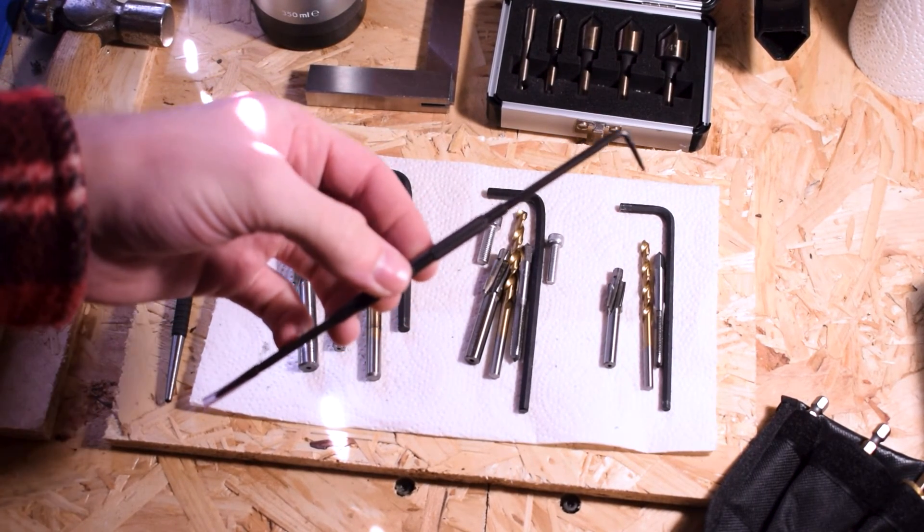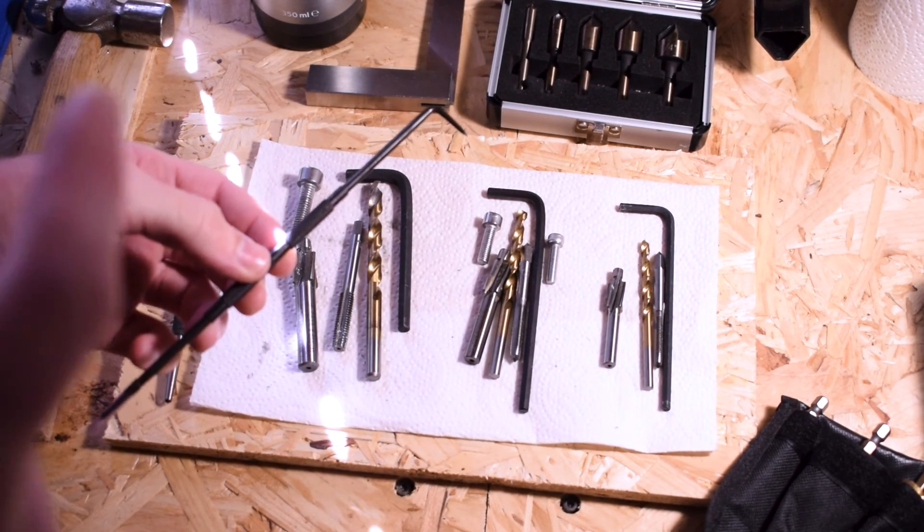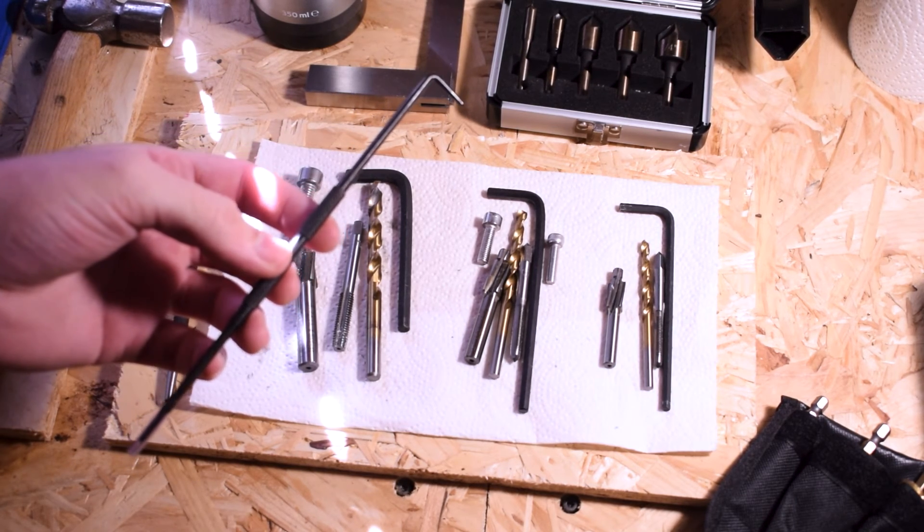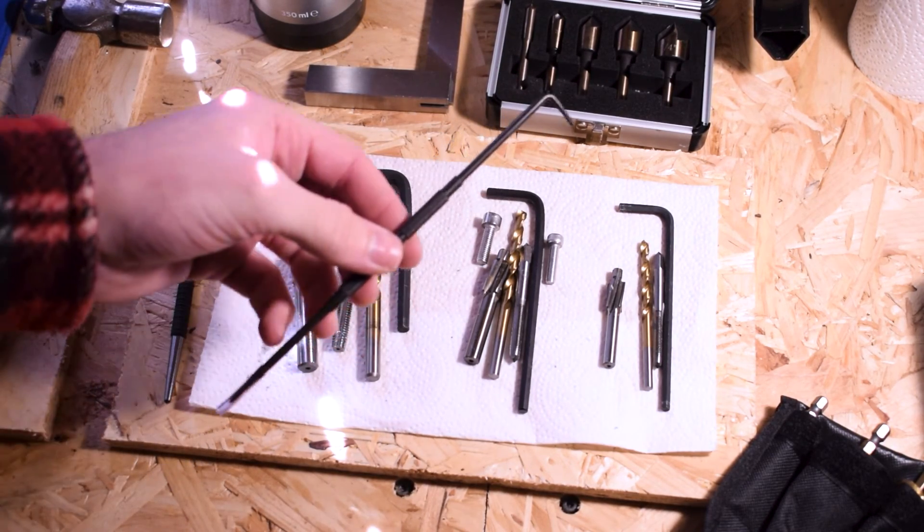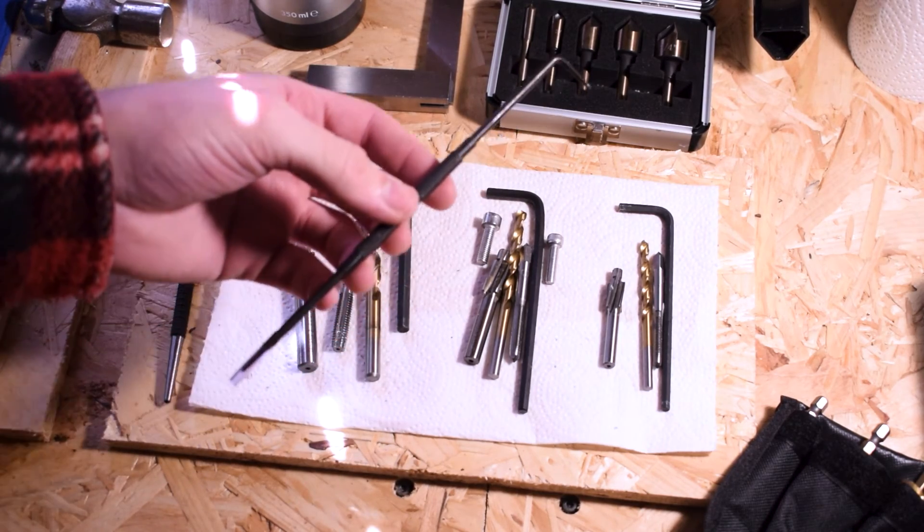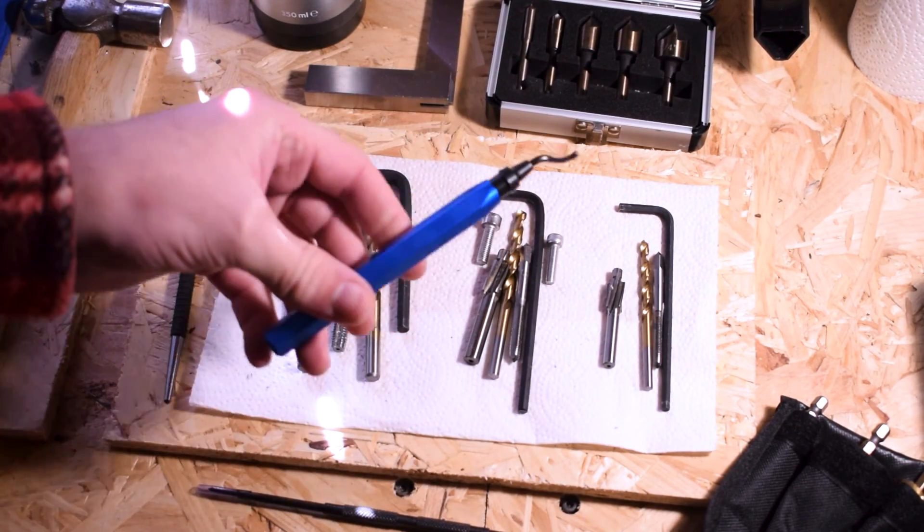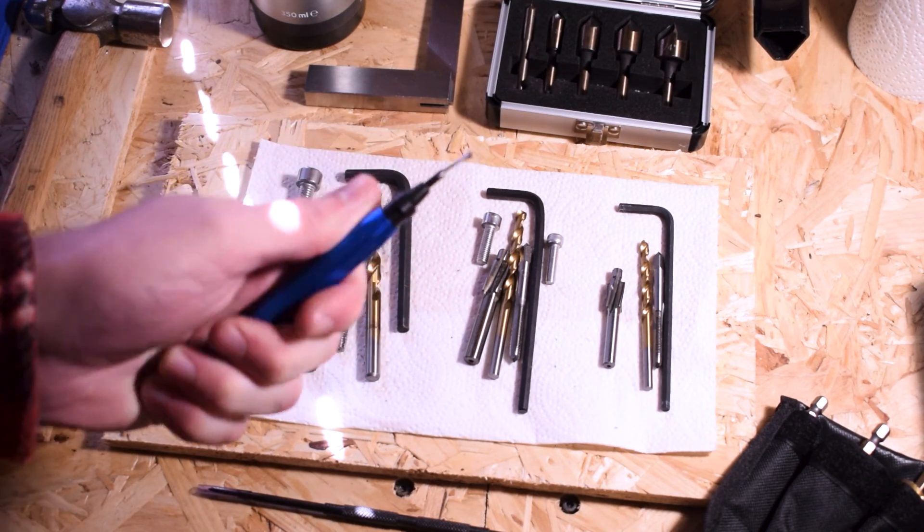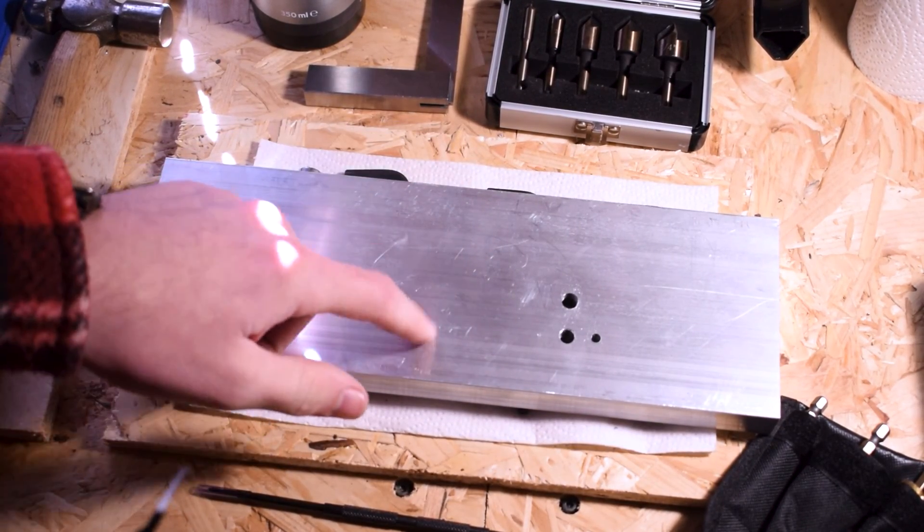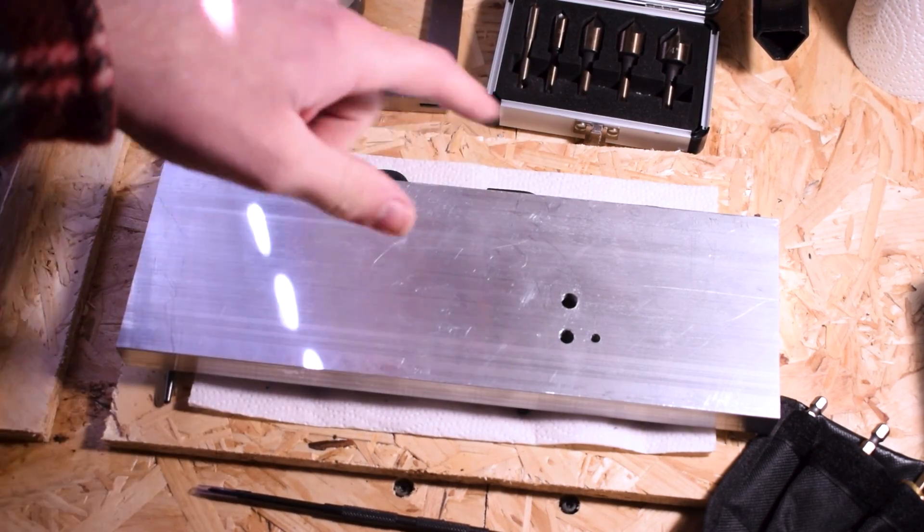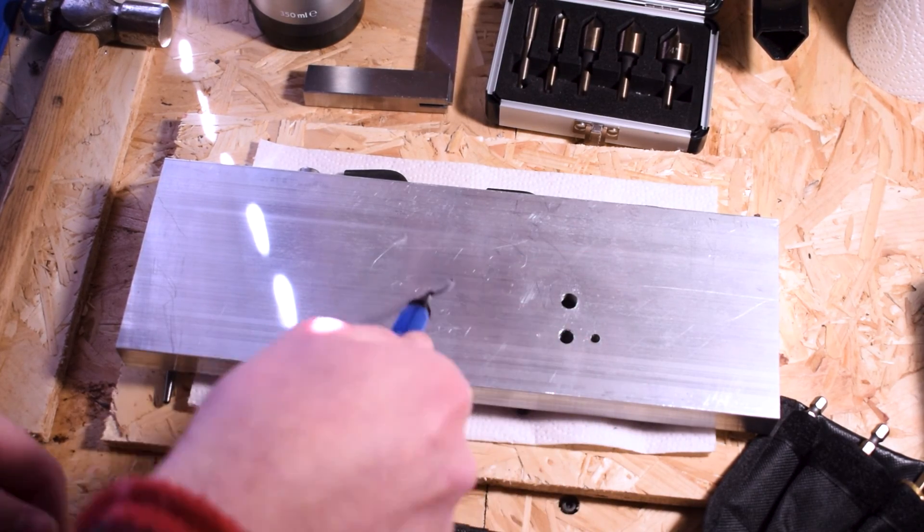Another thing you might find useful is something called a scribe. These are an easy way to make markings on metal rather than trying to draw on it with a pen or pencil - that's going to have inaccuracies due to the thickness of the pen and it wipes off. Something like this allows you to scrape into the aluminum or steel and measure up nice straight guidelines for your hole drilling. The other thing is a deburring tool. If you're drilling larger holes, these are useful - for example, if you're drilling a 50mm hole, it'd be hard to get a countersink bit big enough to do a nice chamfer on the edge, so you could take a tool like this and just scrape your way around the edge.